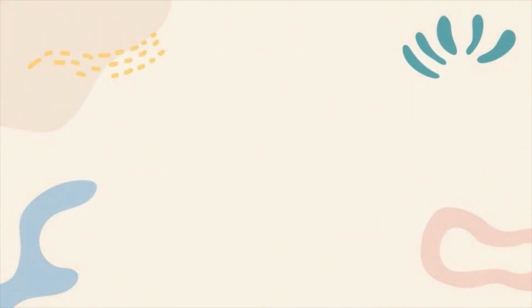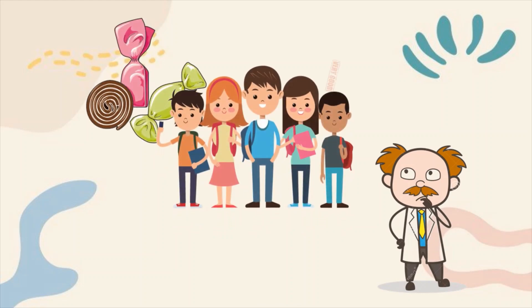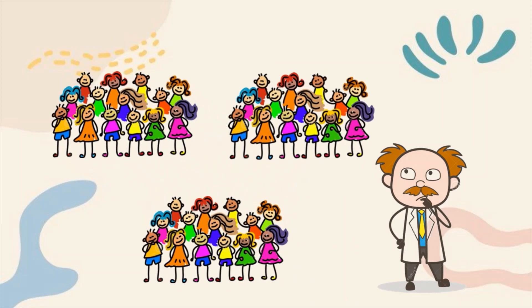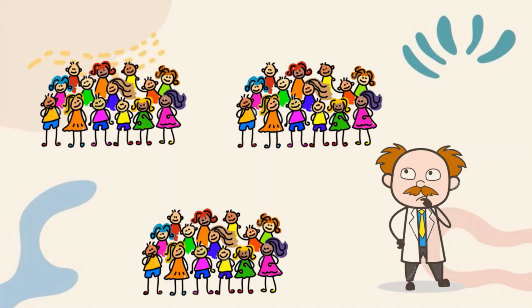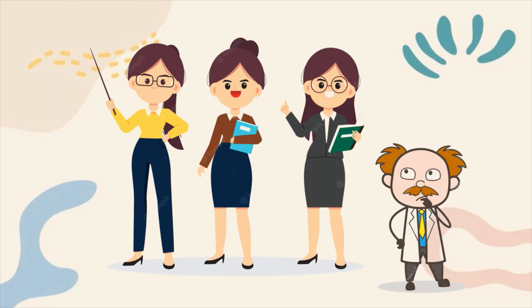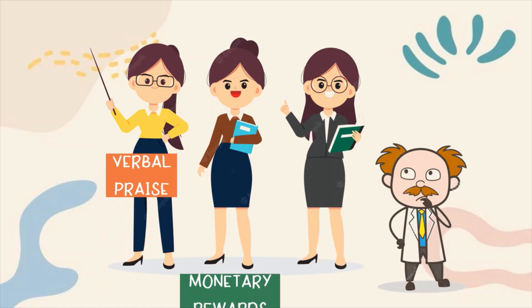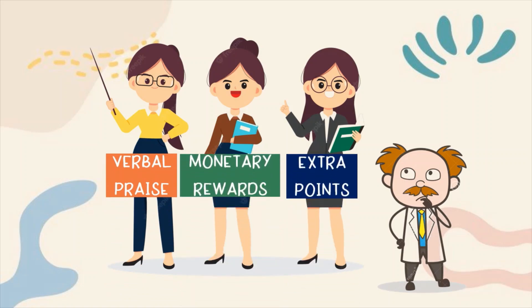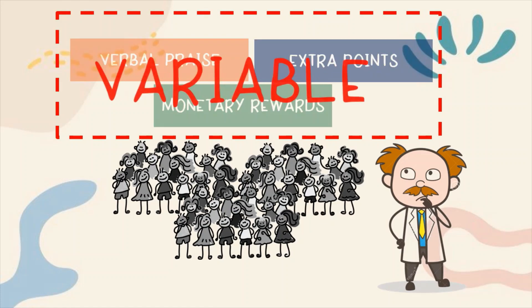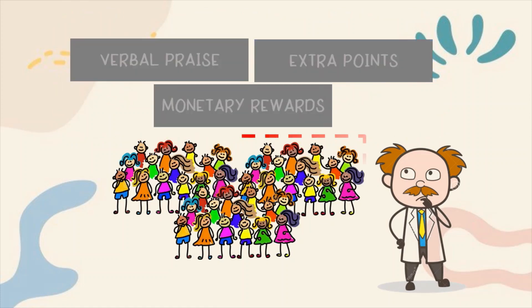An example may make this distinction clearer. Suppose a researcher is interested in studying the effects of reinforcement on student achievement. The researcher systematically divides a large group of students — all of whom are ninth graders — into three smaller subgroups. She then trains the teachers of these subgroups to reinforce their students in different ways: one gives verbal praise, the second gives monetary rewards, the third gives extra points for various tasks the students perform. In this study, the reinforcement would be the variable, while the grade level of the students would be the constant.